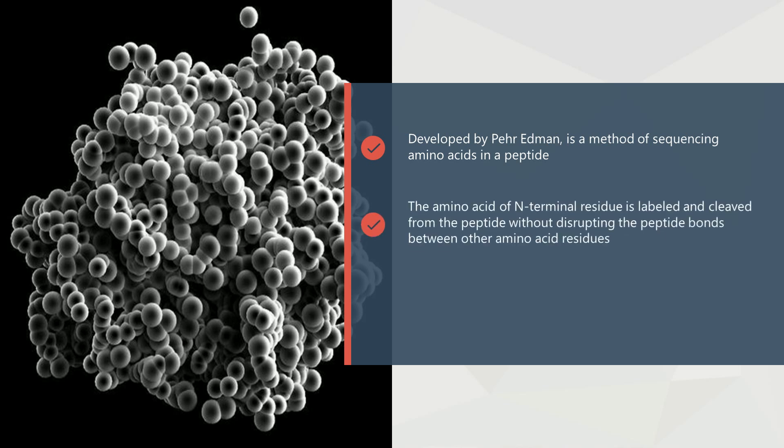Edman degradation, which was developed by Pehr Edman, is a method to sequence amino acids in a peptide. In this method, the amino terminal residue is labeled and cleaved from the peptide without disrupting the peptide bonds between other amino acid residues.